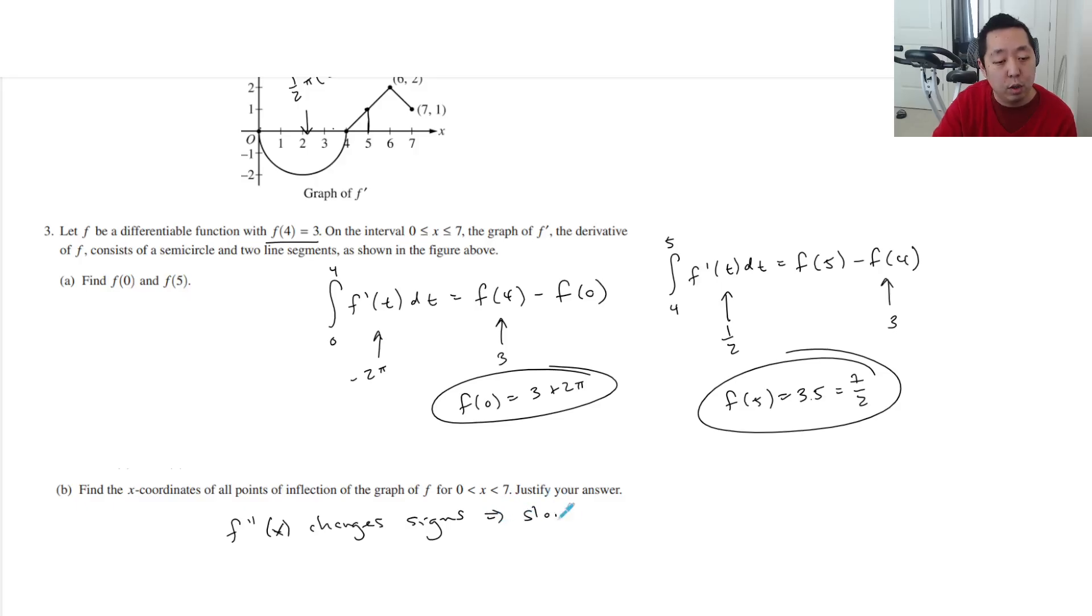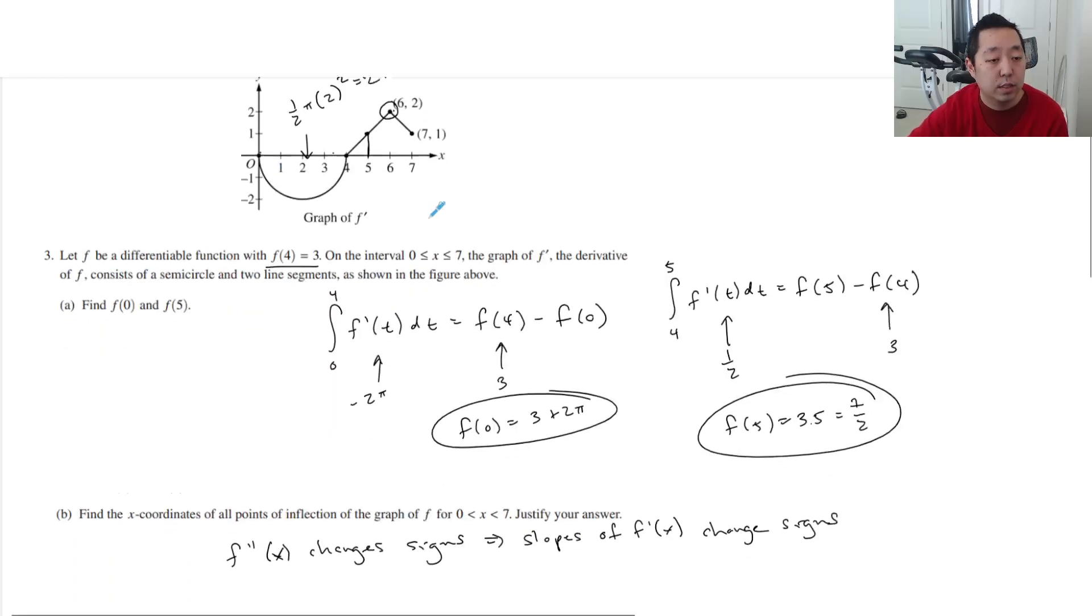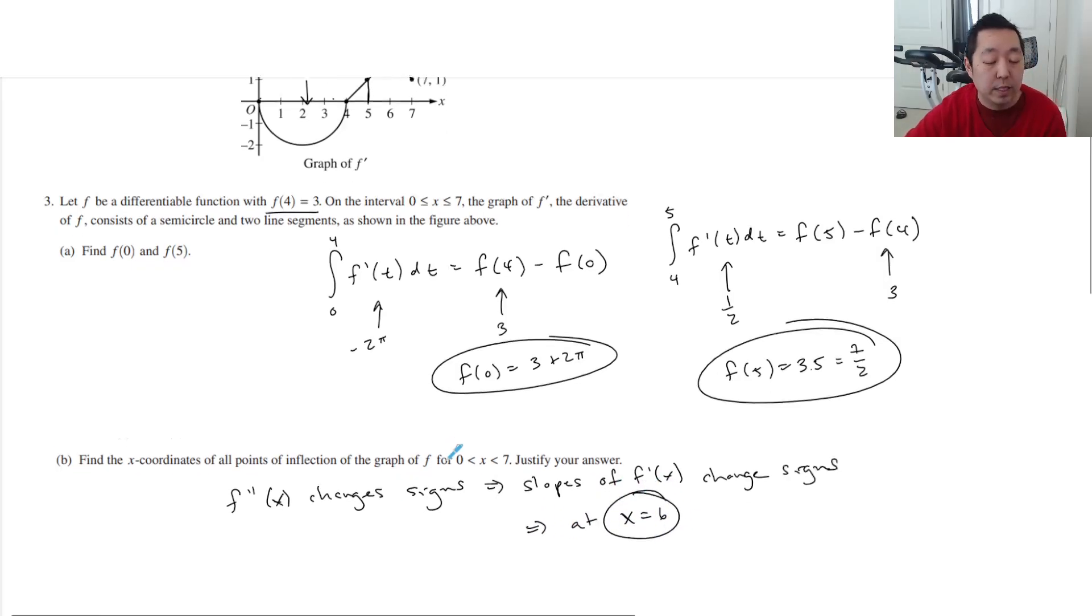That's where the slopes of f prime changes sign. So where do the slopes of f prime change sign is right here, only at x equals 6. And that happens at x equals 6. That's it.